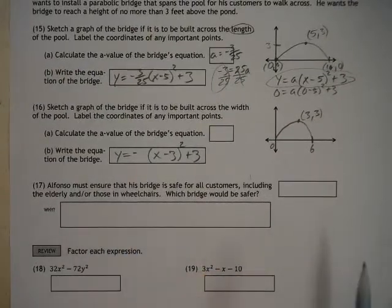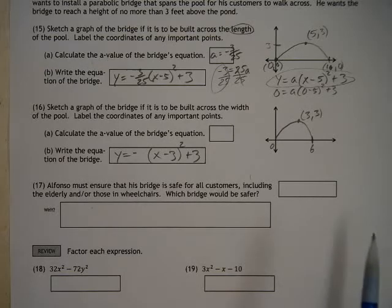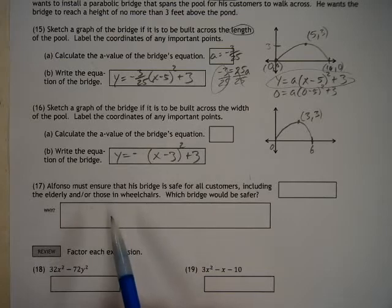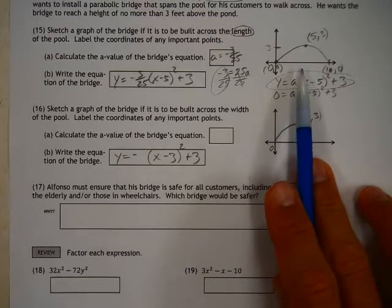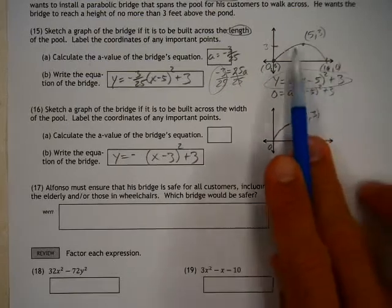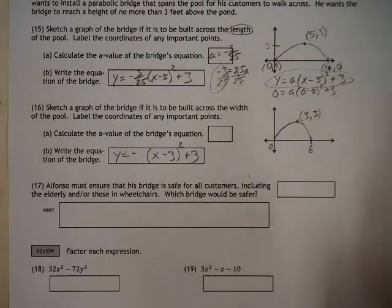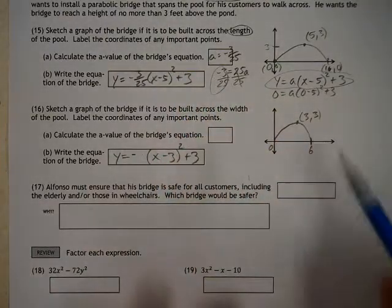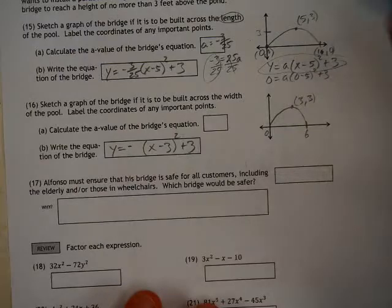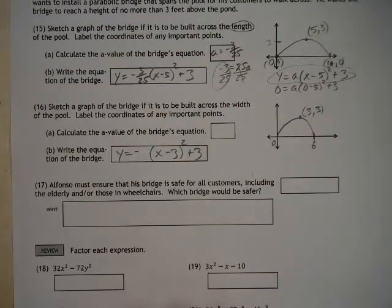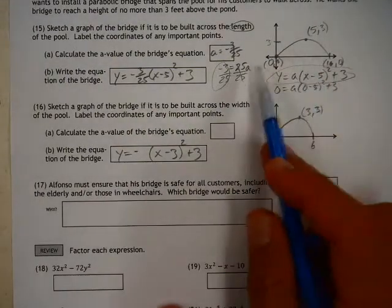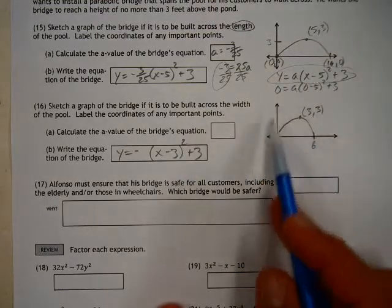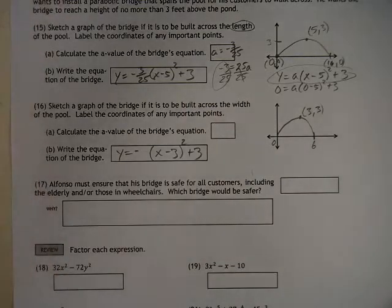Lastly, Alfonso must ensure that the bridge is safe for all customers, including the elderly and those in wheelchairs. Which is safer? Well, I would probably wager a guess that this one is going to be safer because it's wider and it's going to have a more gradual slope. Also, you know, it says no more than 3 feet above the ground. You could also say, well, I only want to make it 2 feet above the ground. It's going to have even a lower thing. So, I would say the first one, regardless, is going to be better because regardless of the height of your bridge, it's going to be more gradual. This thing's going to be really kind of tall and bumpy.